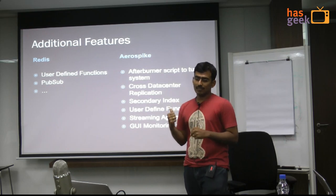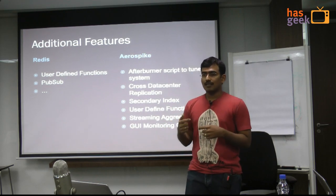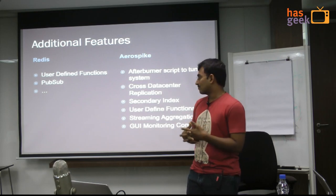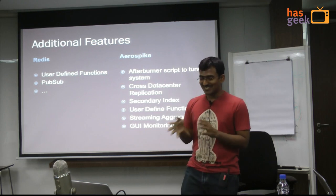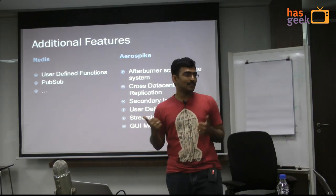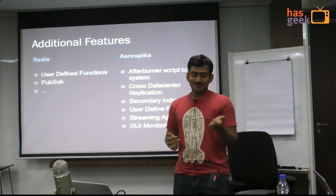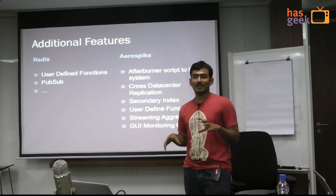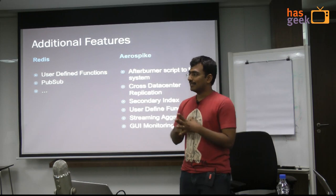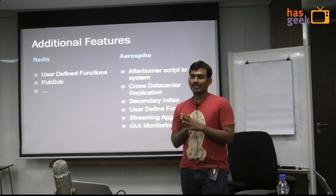Aerospike supports cross-data-center replication across geographies asynchronously. We have support for secondary indices — you can define secondary indices across sets and across different keys. Cassandra has secondary index support, but Couchbase builds the secondary index asynchronously using a background thread that keeps repairing the index. Aerospike ensures the secondary index doesn't fall out — no repair needed. User-defined functions (UDFs) are something borrowed from Redis. You can define anything you want in Lua — it's one of the fastest embedded interpreters available.